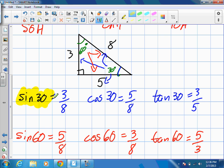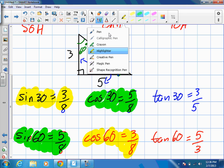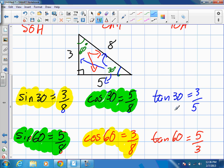Sine 30 gives us the same ratio as cosine 60 does. Cosine 30 gives us the same ratio as sine 60. And our tangents, when we switch angles, are inverses of each other. Three over five, and five over three.